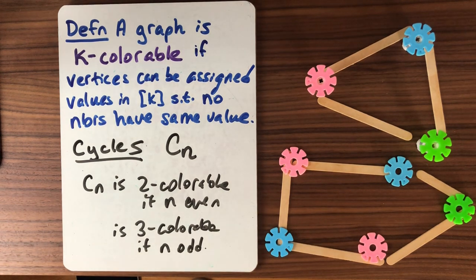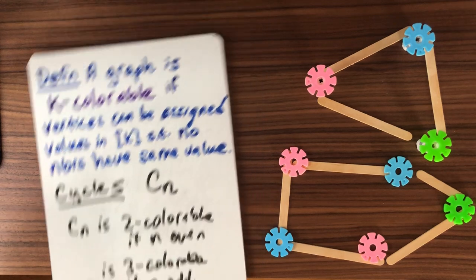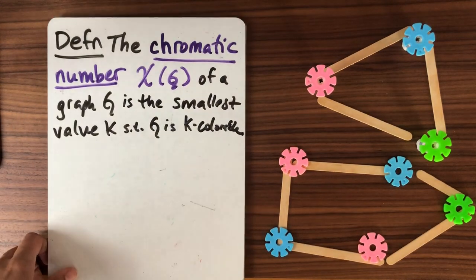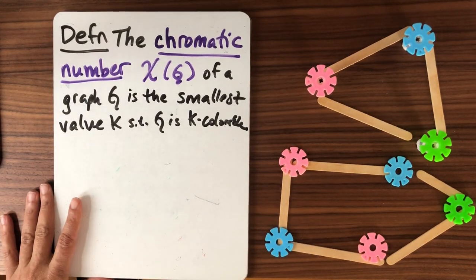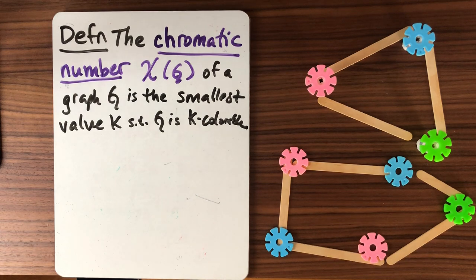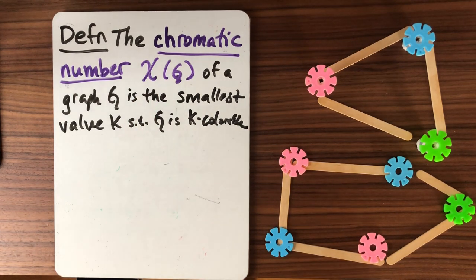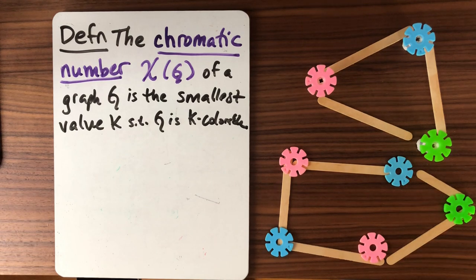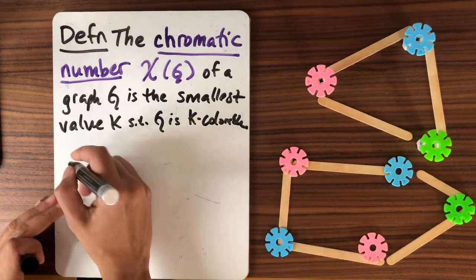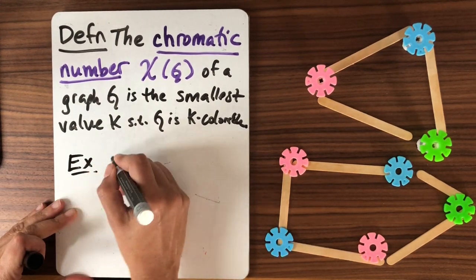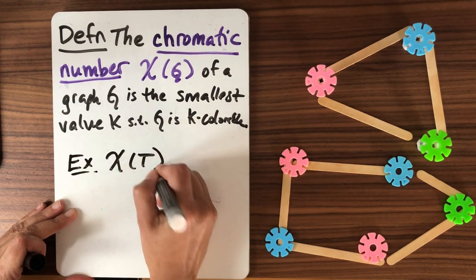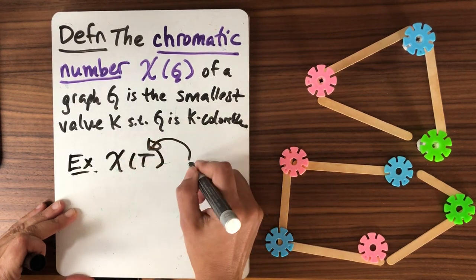And that idea of the minimum k for which I could be k-colorable is what we call the chromatic number of a graph. So the chromatic number, we use the Greek letter chi to denote it, is the smallest integer k such that the graph is k-colorable. Let's do another example. Let's compute chi of T where T is a tree.